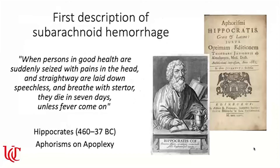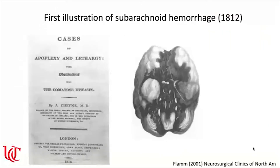The first description of subarachnoid hemorrhage was by Hippocrates in his book on aphorisms on apoplexy. He described that when a person in good health is suddenly seized with pains in the head and straightaway is laid down speechless and breathes with stertor, they die in seven days unless fever comes on. Again, we've come a long way — but this was some of the first descriptions of subarachnoid hemorrhage and what patient outcomes were like back then.